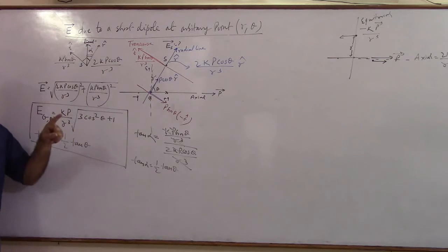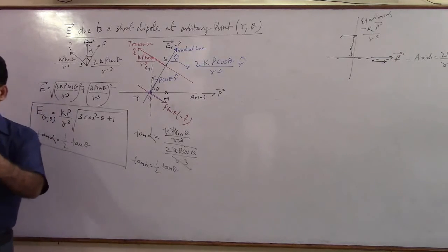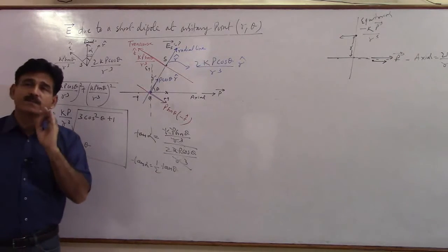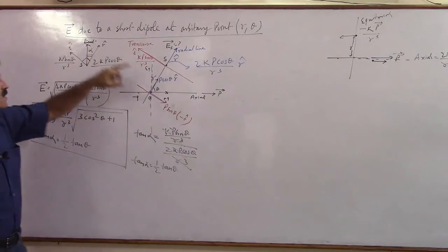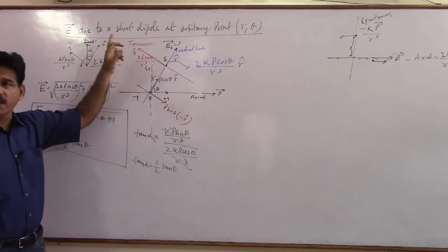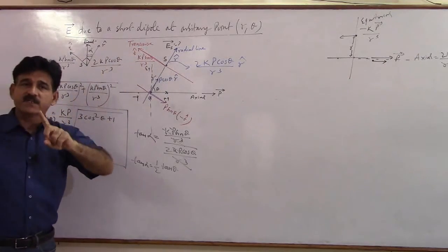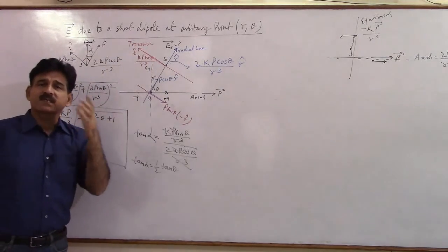And the angle that the net field makes with the radial line, now this for me is the most important point. Angle alpha is not measured from axial line, it is not measured from the equatorial line, it is measured from the radial line. And what is radial line?